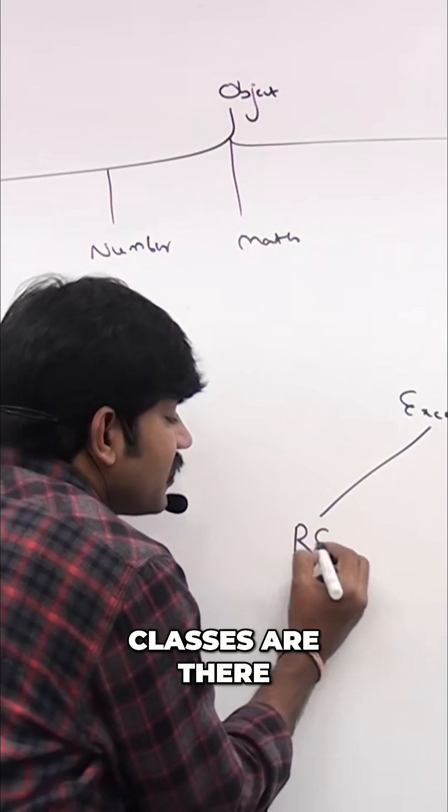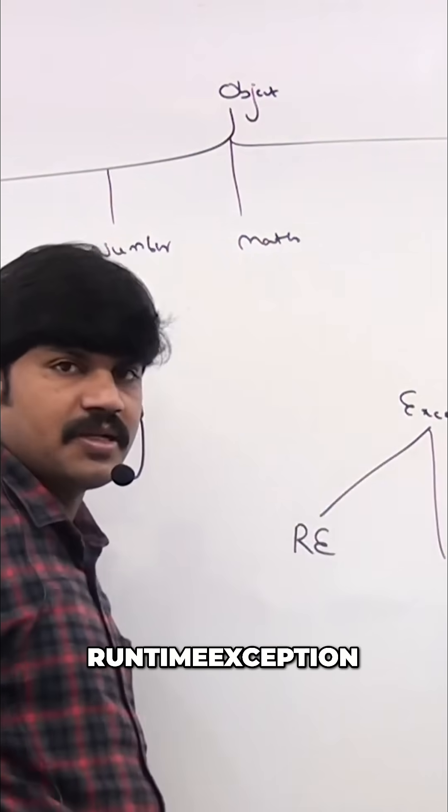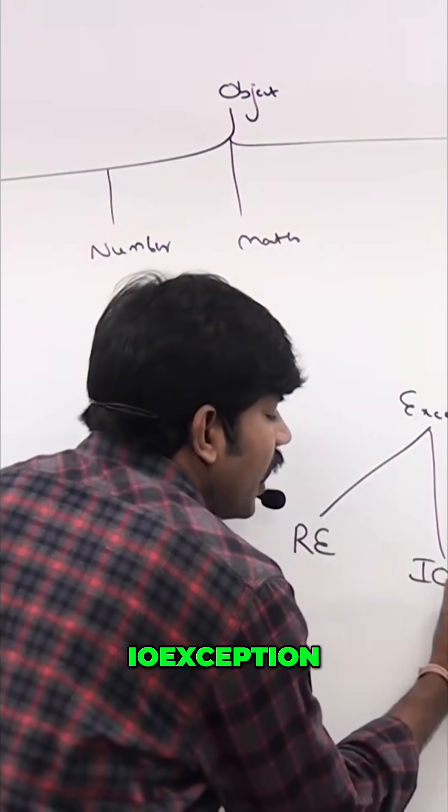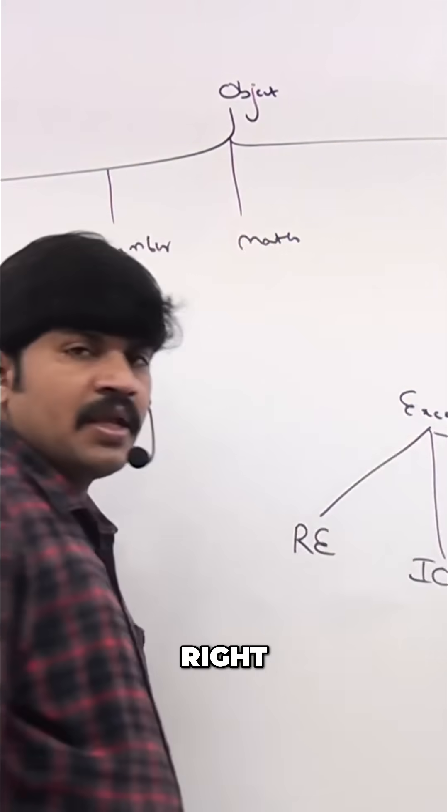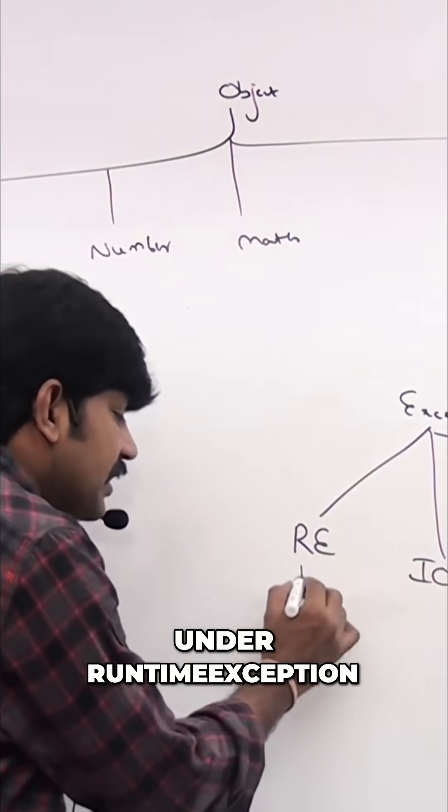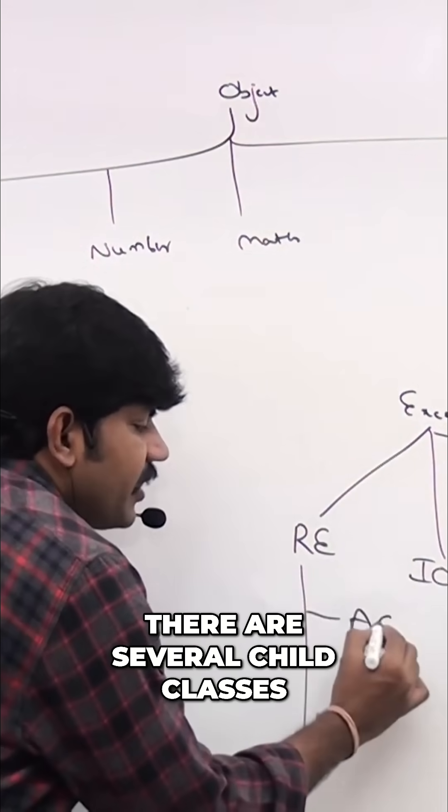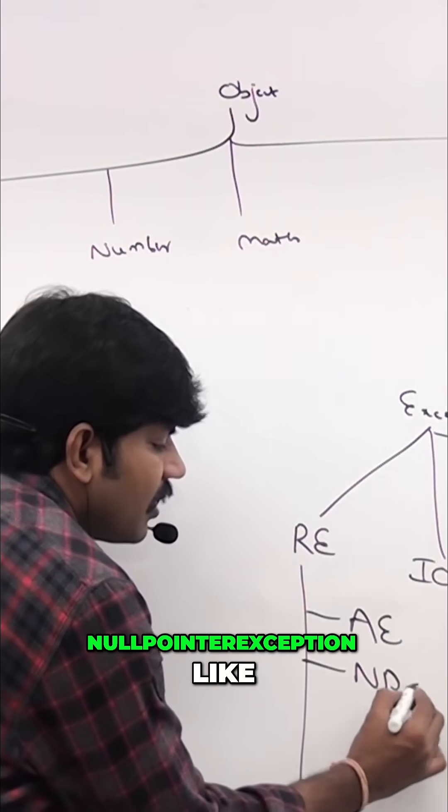RuntimeException, IOException like that. Next, under RuntimeException again there are several child classes: ArithmeticException, NullPointerException, dot dot dot like that, sir.